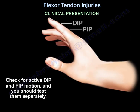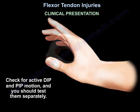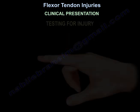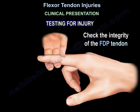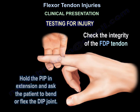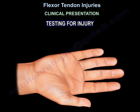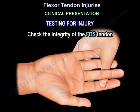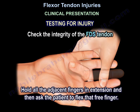Check for active DIP and PIP motion and test them separately. To test the profundus tendon, hold the PIP in extension and ask the patient to flex the DIP joint. To check the flexor digitorum superficialis, hold all adjacent fingers in extension and ask the patient to flex the free finger.